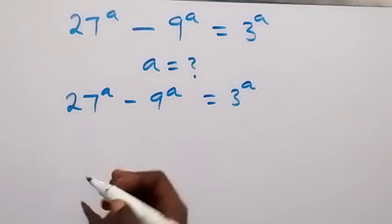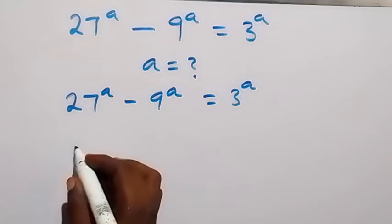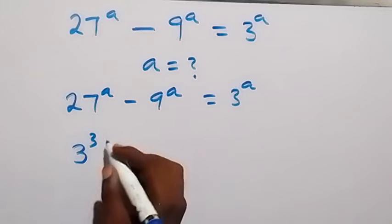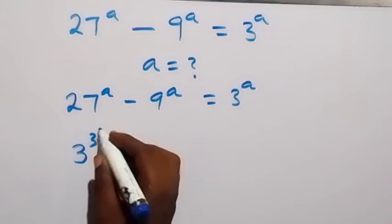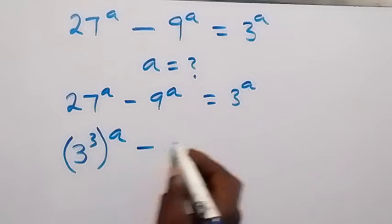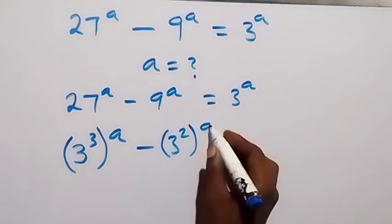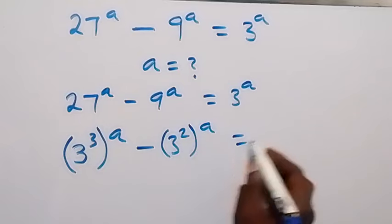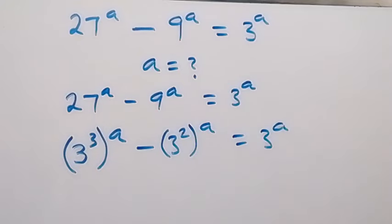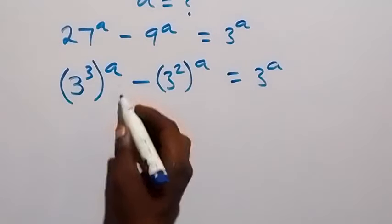From here, let's change 27 to be 3 raised to power 3, and 9 to be 3 squared. So we have 3 raised to power 3, then raised to power a, minus 3 squared raised to power a, equals to 3 raised to power a. From here, using the law of indices.